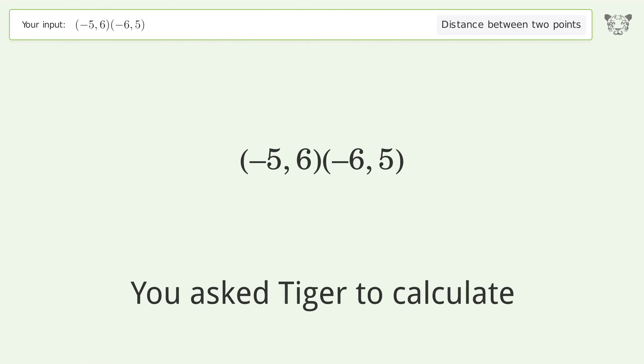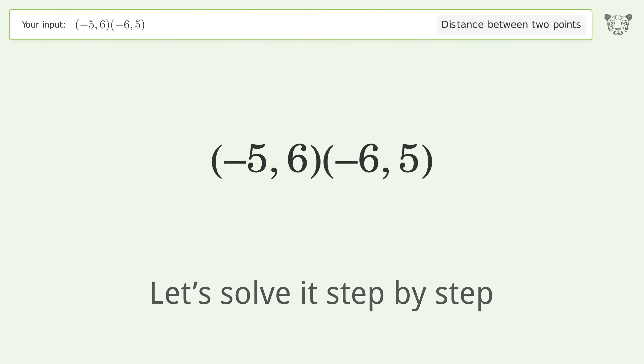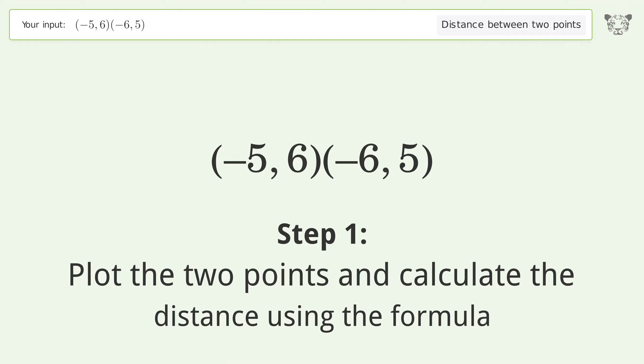You asked Tiger to calculate the distance between two points. The distance between the two points is the square root of 2, or 1.414. Let's solve it step by step. Plot the two points and calculate the distance using the formula.